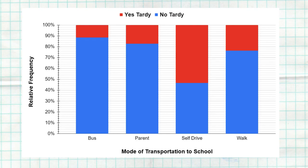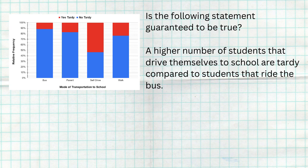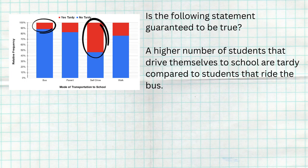When you see a relative frequency segmented bar graph like this, you might see a question like: is the following statement guaranteed to be true? 'A higher number of students that drive themselves to school are tardy compared to students that ride the bus.' A lot of kids will just look at this and say the red section for kids that drive themselves is way bigger than for kids that ride the bus, so it's true. But the problem is we're looking at relative frequencies — proportions — and the question asks about a higher number of students.